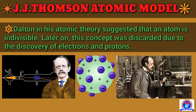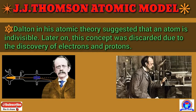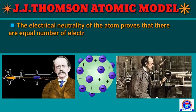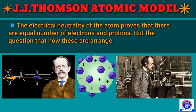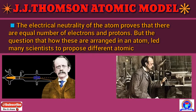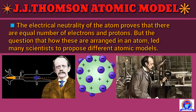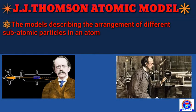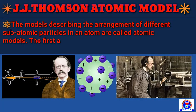Later on, this concept was discarded due to the discovery of electrons and protons. The electrical neutrality of atoms proves that there are equal numbers of electrons and protons. But the question of how these are arranged in an atom led many scientists to propose different atomic models.